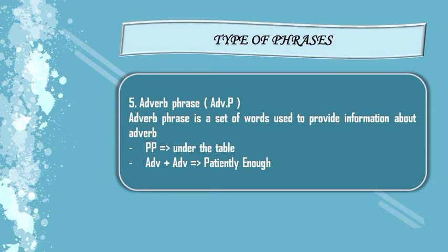And the last is adverb phrase. An adverb phrase is a set of words used to provide information about an adverb. The keywords of adverb phrase are: a prepositional phrase — for example, 'under the table'; and adverb plus adverb — for example, 'patiently enough.'